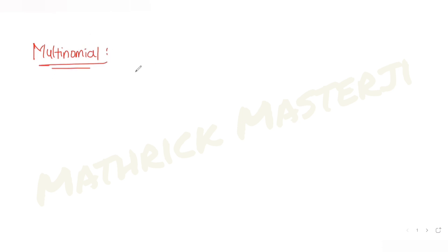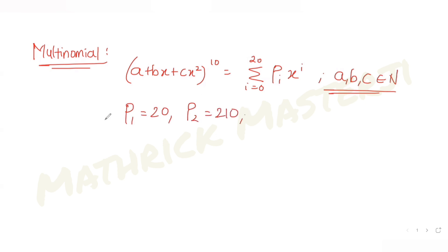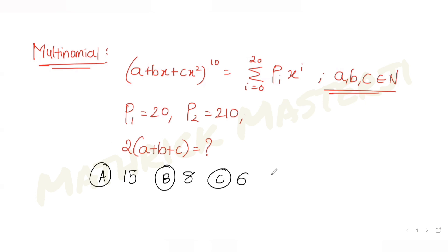The question tells us: let (a + bx + cx²) raised to the power 10 be equal to the summation of i equals 0 to 20 of pᵢ times x raised to i, where a, b, and c belong to natural numbers. The question further tells us p1 is 20 and p2 is 210, and asks us to find the value of 2 times (a + b + c). The answer choices are 15, 8, 6, and 12.